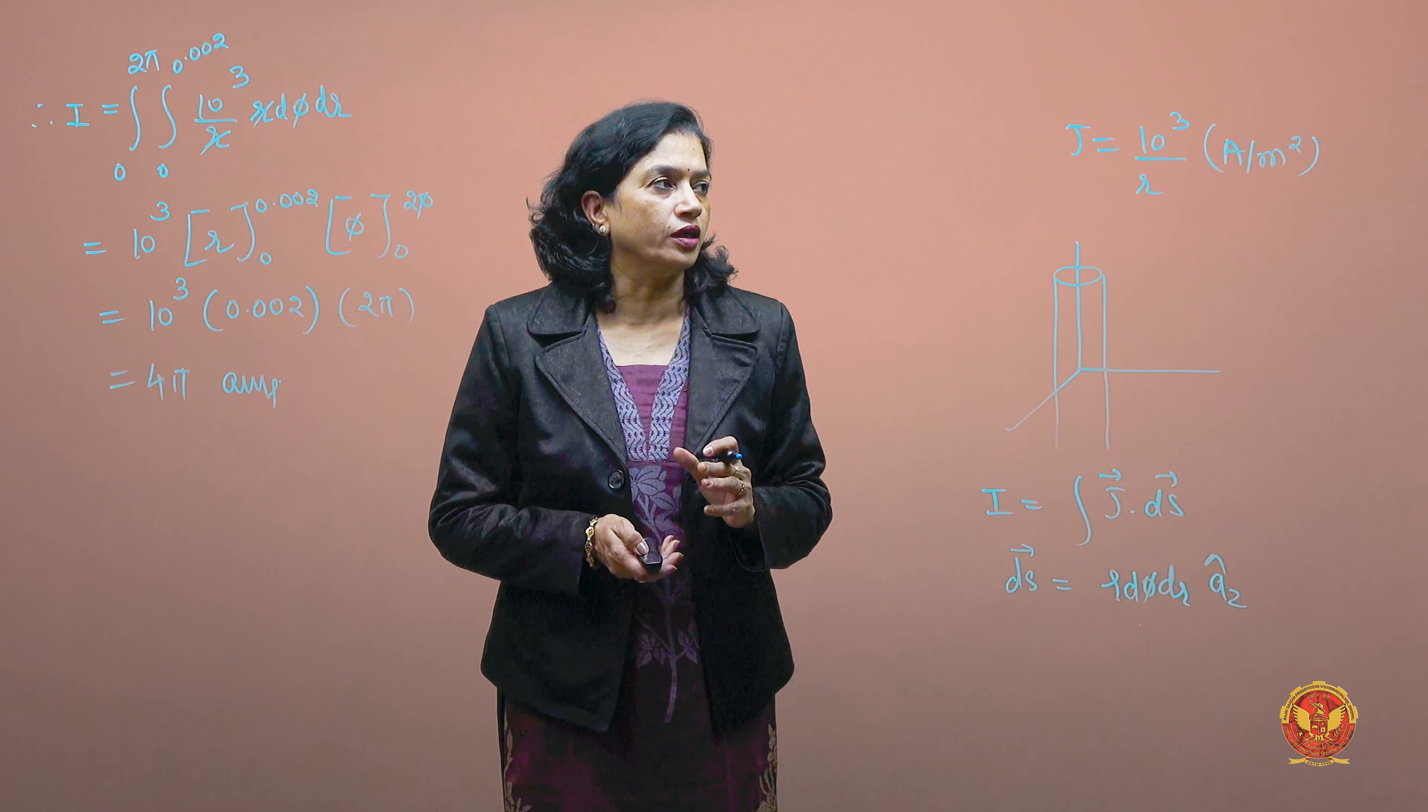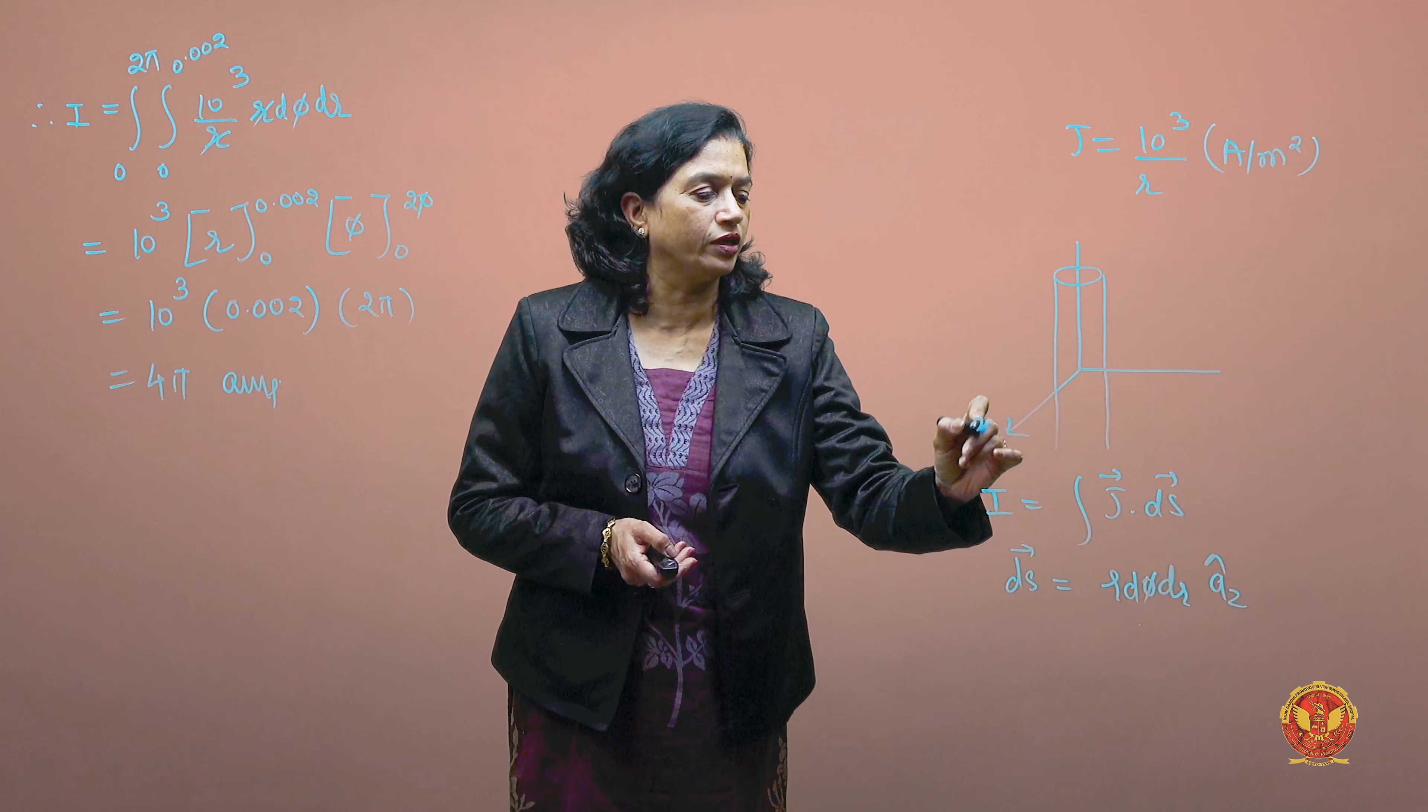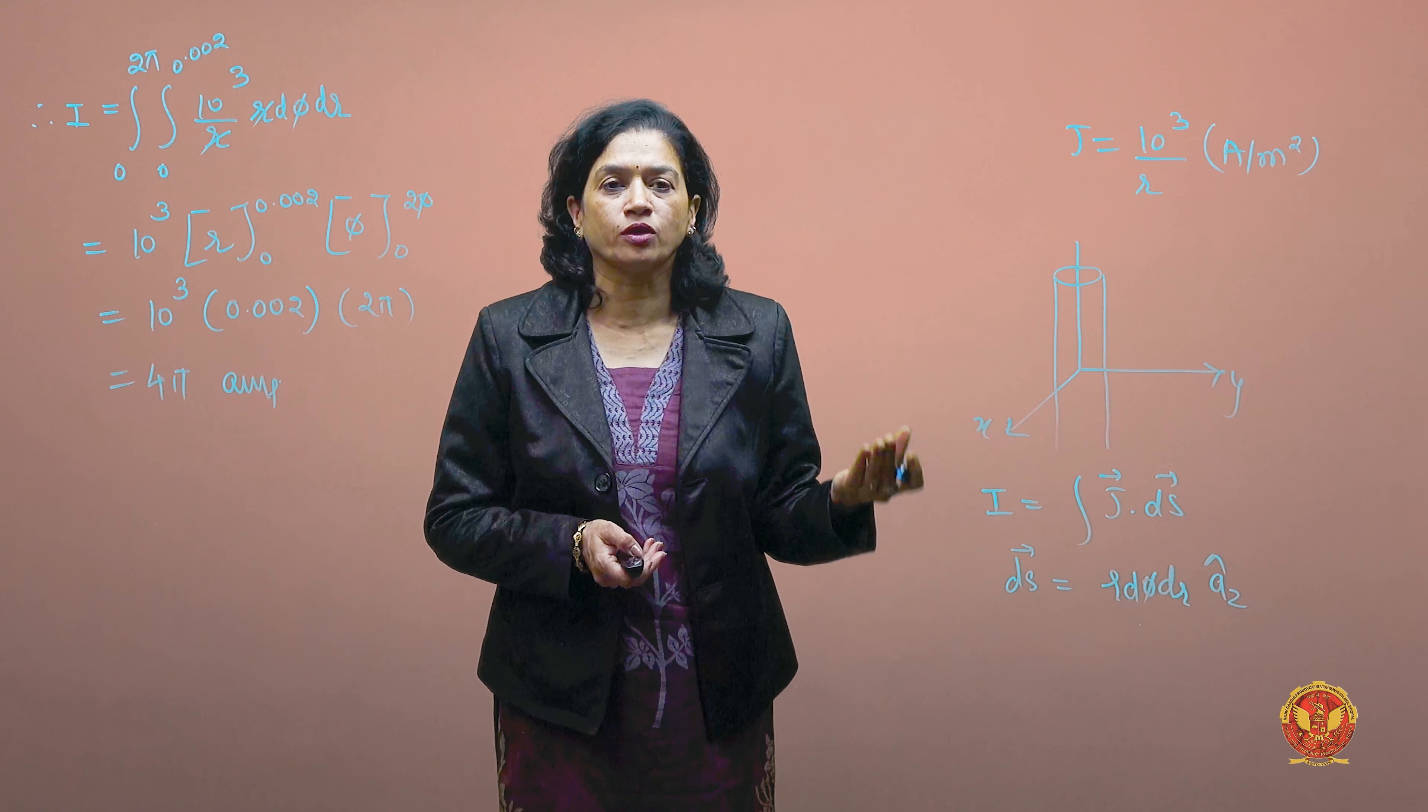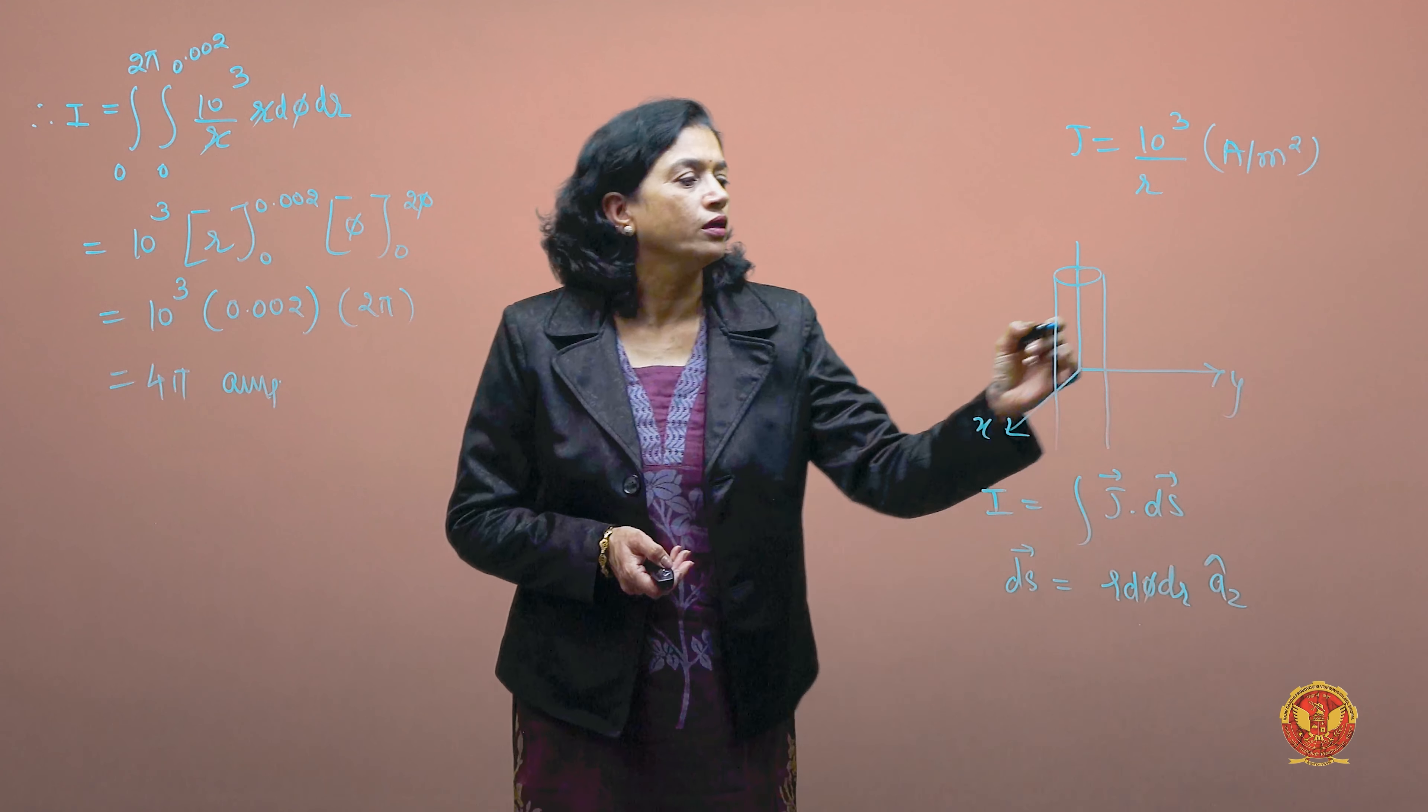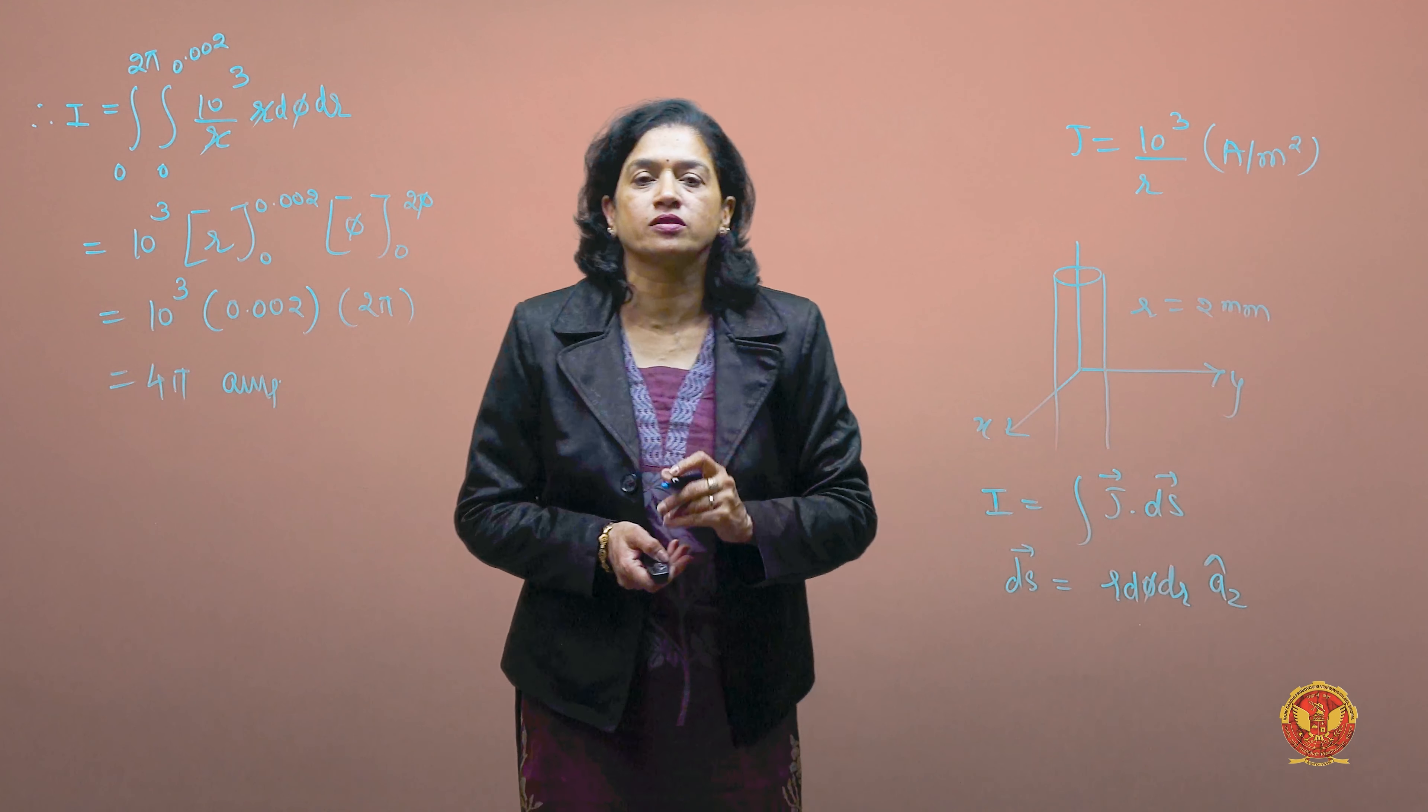This means the conductor is placed perpendicular to the xy plane, so we can consider it in the cylindrical coordinate system. The radius of the conductor is 2 mm, which we consider in cylindrical coordinates.